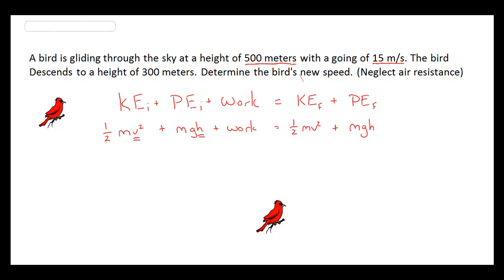The bird descends to a height of 300 meters. That's going to be important for the final part of the problem, where we look at the final potential energy. The bird descended, so some of its potential energy is now going to be converted into kinetic energy as it descends from 500 to 300 meters.